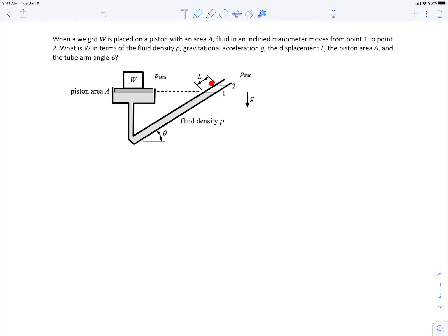That's a distance L along the incline. This tube here is inclined with an angle theta with respect to the horizontal. And then the end of the tube is open to the atmosphere as well. So this is called an inclined tube manometer.